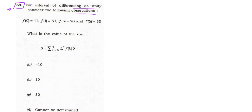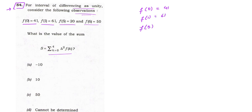The observations are: f(0) = 41, f(1) = 61, f(5) = 20, and f(6) = 50. What is the value of the sum S, where S equals summation from k = 0 to 4 of Δ²f(k)? Let us note down our values: f(0) = 41, f(1) = 61, f(5) = 20, and f(6) = 50.